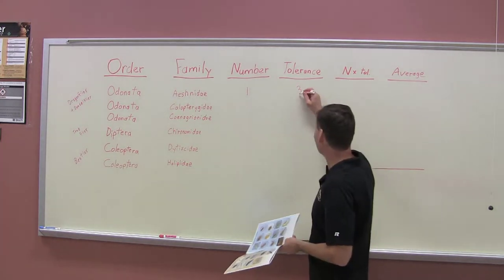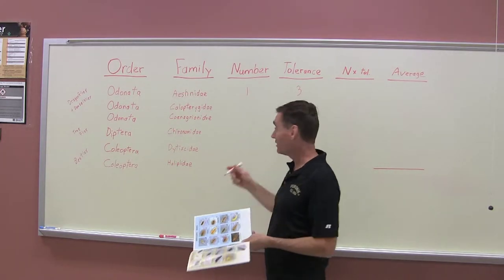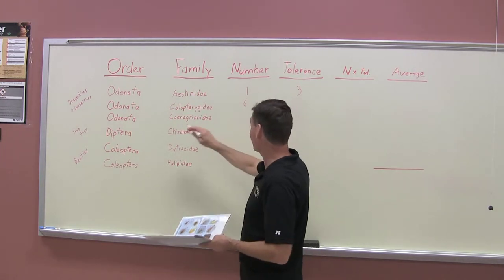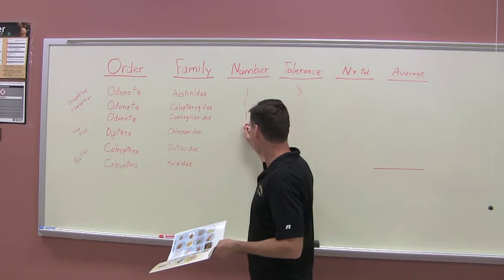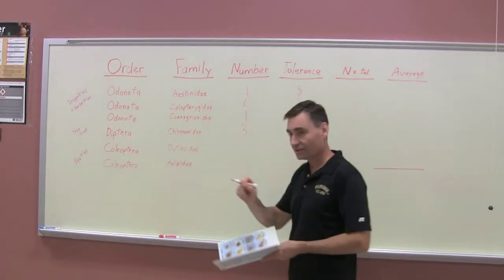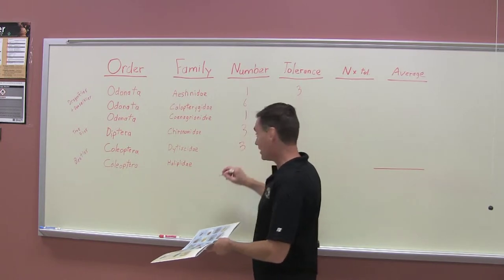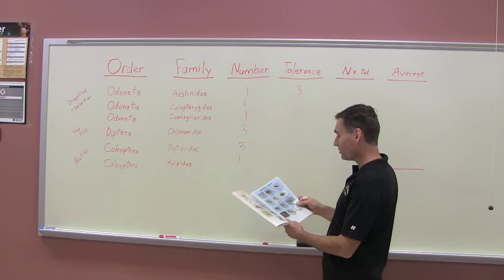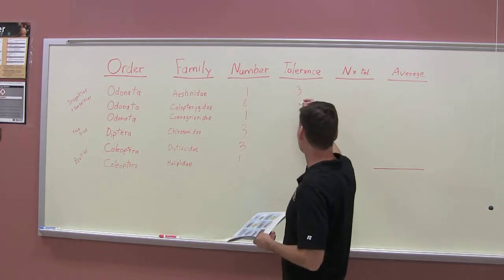You want to get the numbers and tolerance of everything we found. If we found one Aeshnidae, six damselflies, three chironomids (those are the little red bloodworms), three predacious diving beetles, and one Gyrinidae, we look up the tolerance values associated with these different insects.